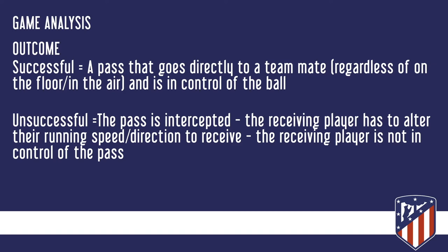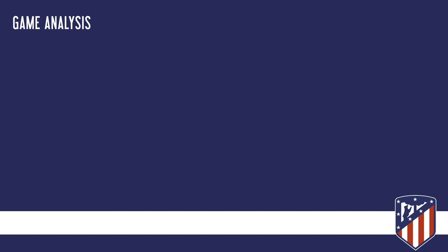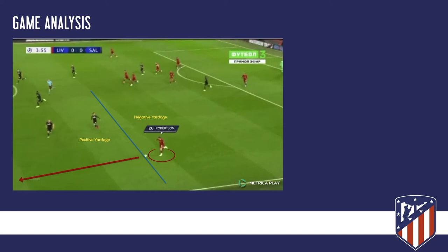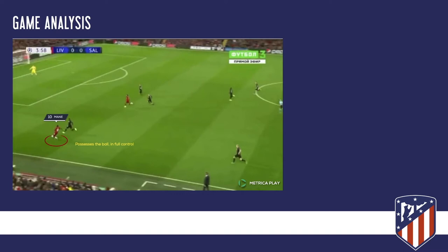Let's have a look at the first example. This is Robertson against Salzburg. You can see negative yardage and positive yardage. He's passing to Mane, who receives the ball and is in total control. So that would be a successful positive pass.